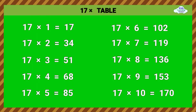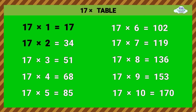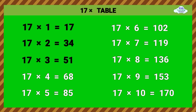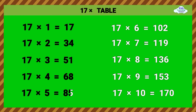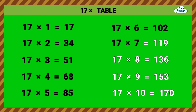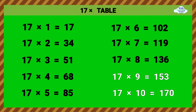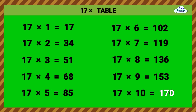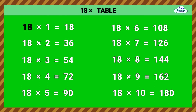16 times 10 equals 160. Seventeen times table. 17 times 1 equals 17. 17 times 2 equals 34. 17 times 3 equals 51. 17 times 4 equals 68. 17 times 5 equals 85. 17 times 6 equals 102. 17 times 7 equals 119. 17 times 8 equals 136. 17 times 9 equals 153. 17 times 10 equals 170.